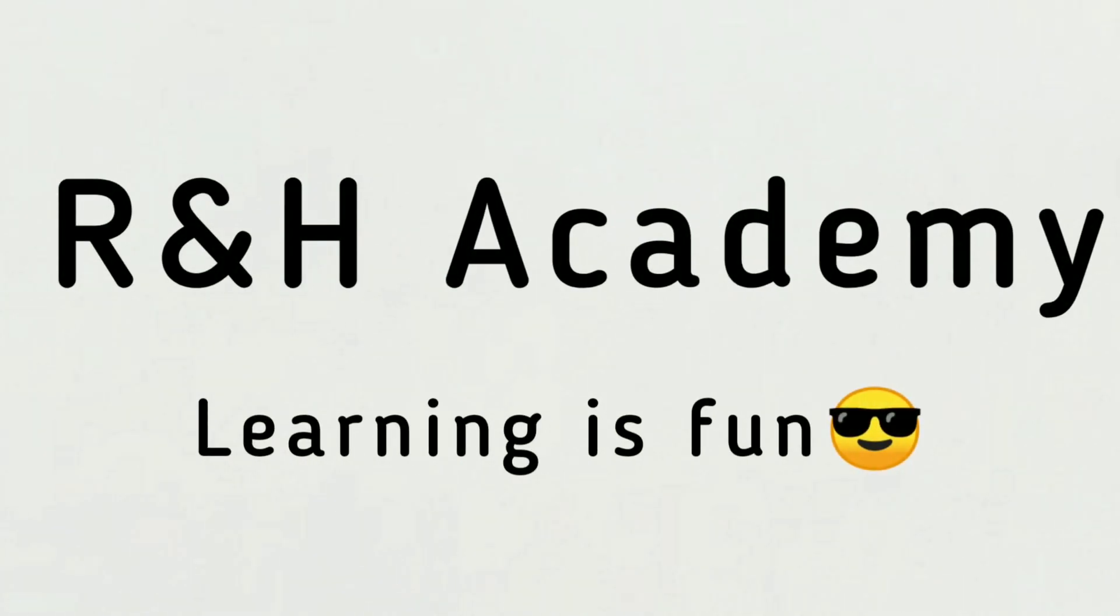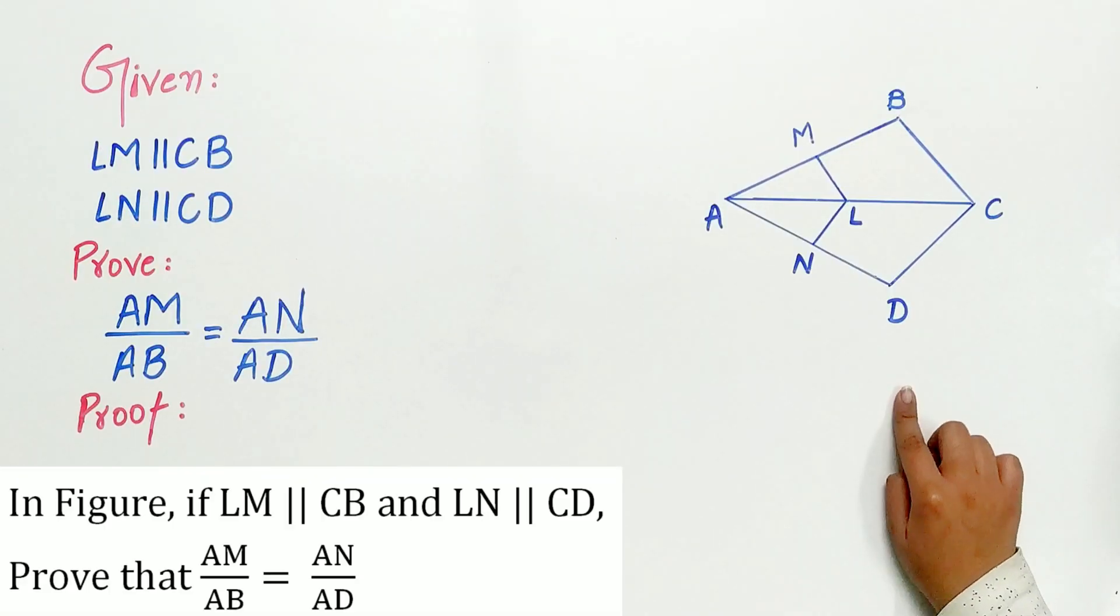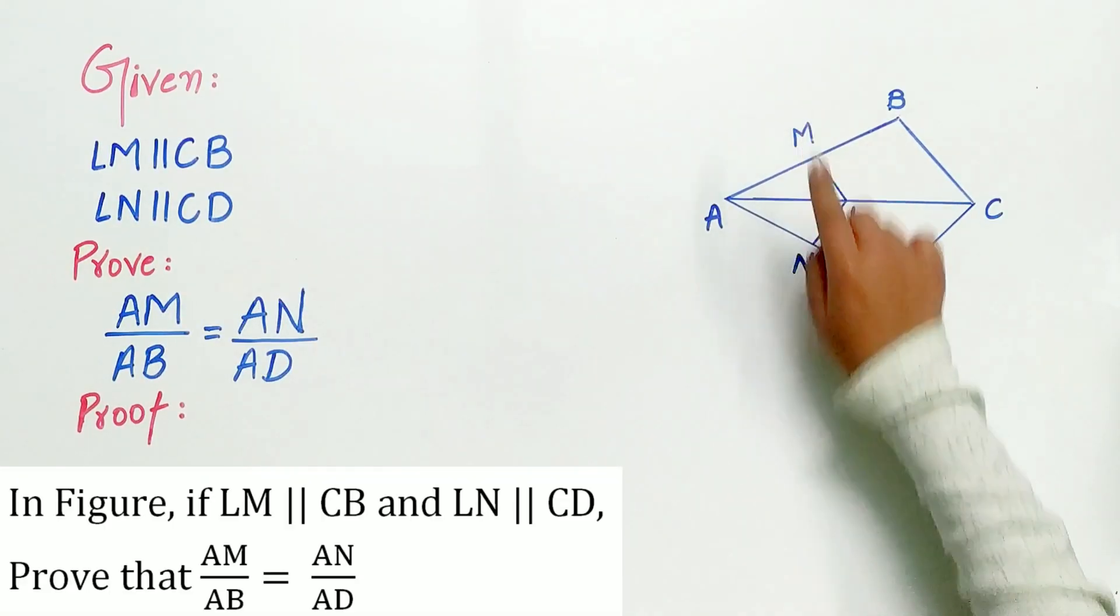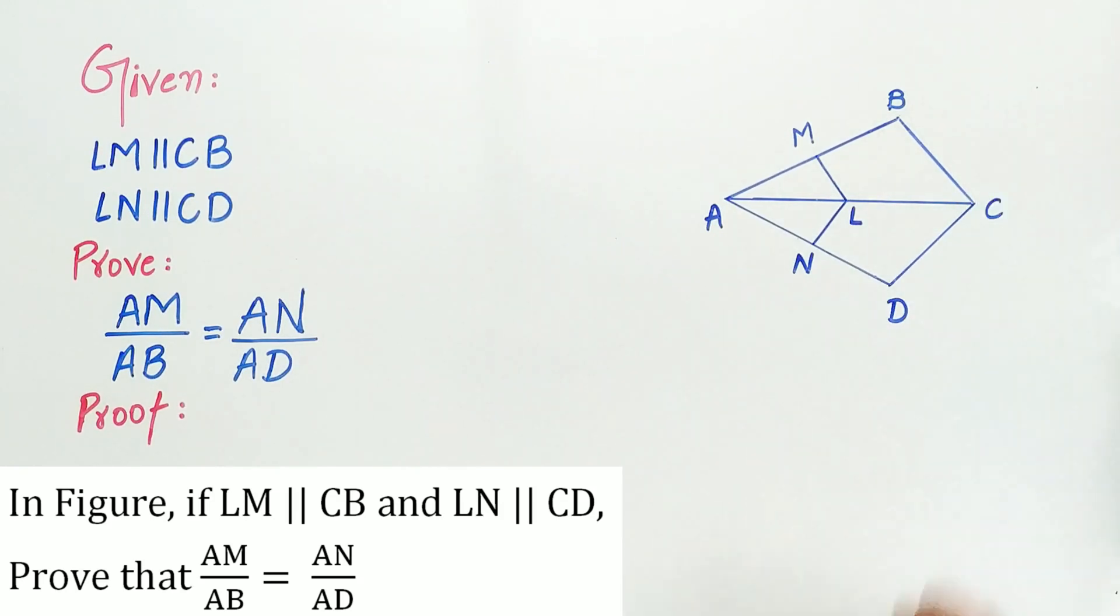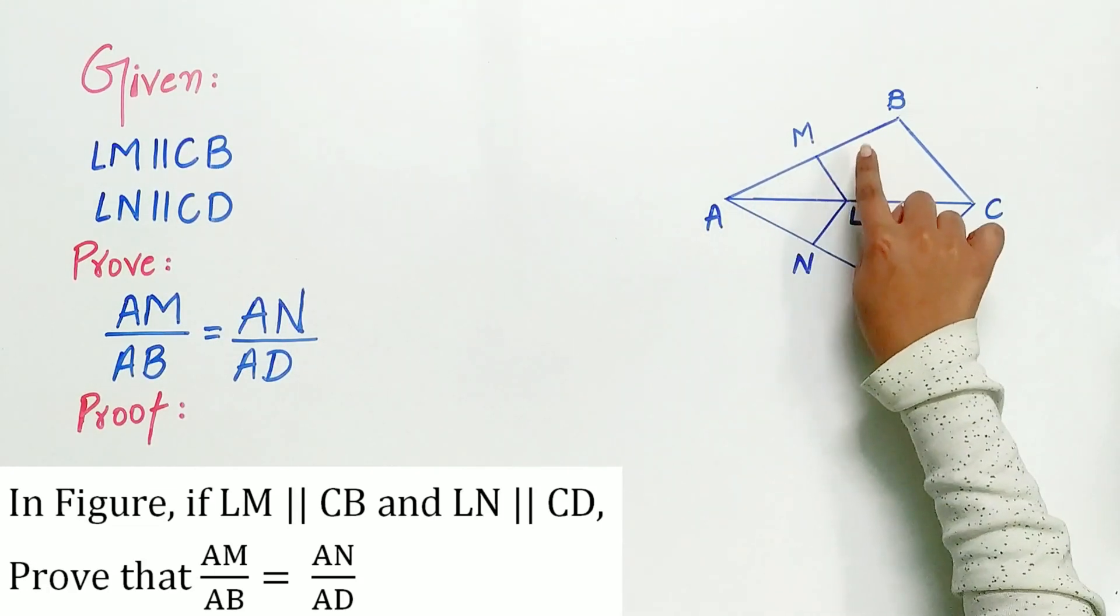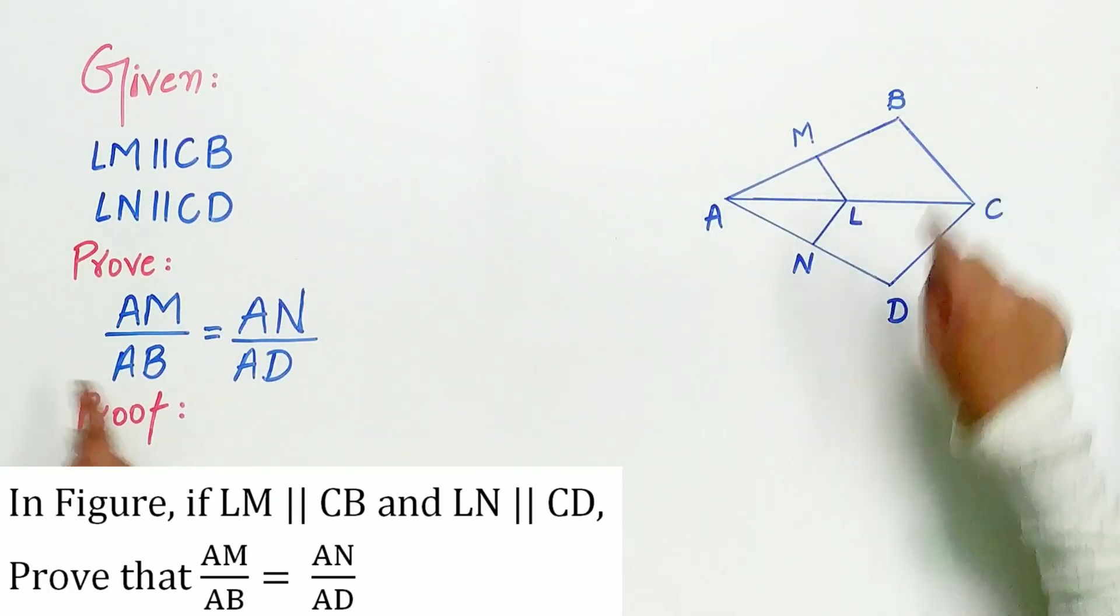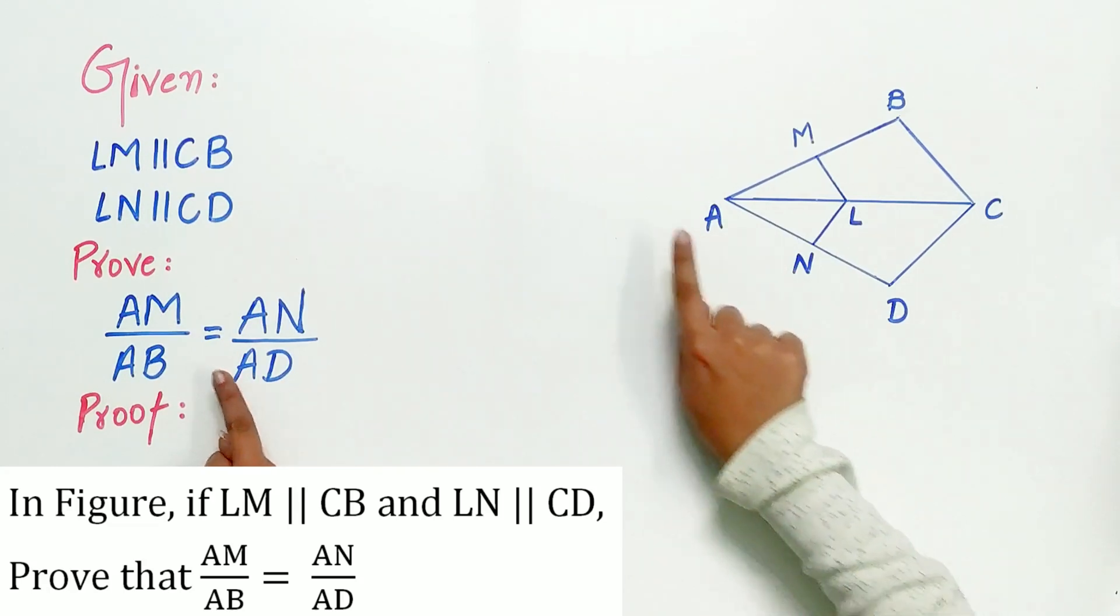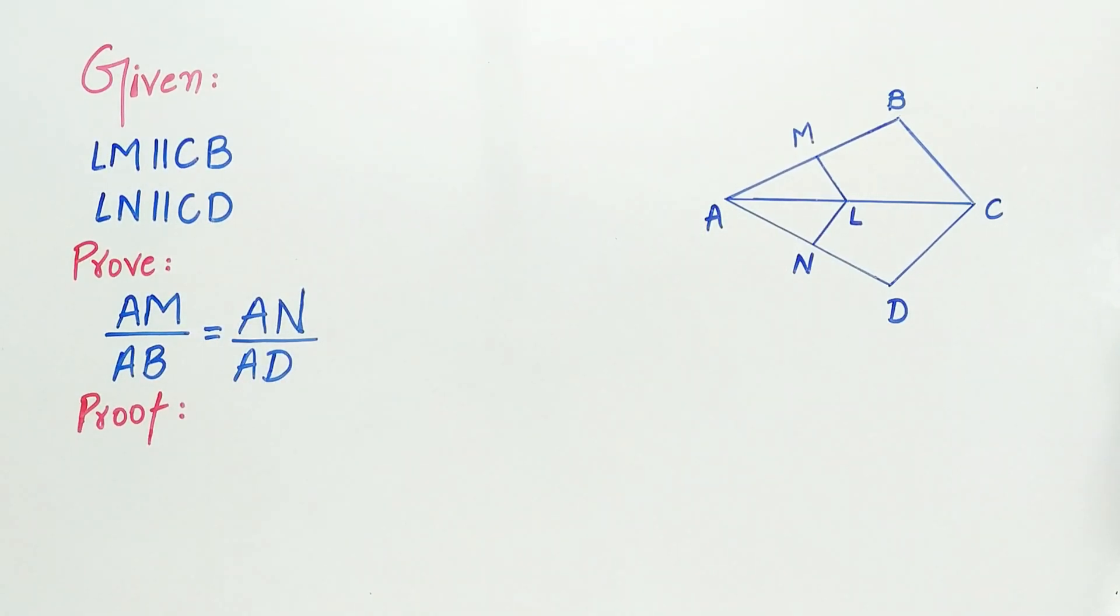Welcome to R&H Academy channel. Question 3 of XI 6.2 says, in figure, if LM is parallel to CB and LN is parallel to CD, we have to prove that AM by AB is equal to AN by AD. So let's find out.